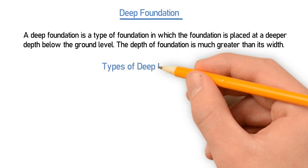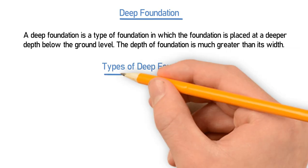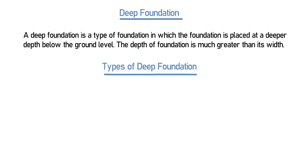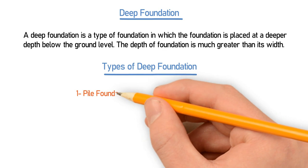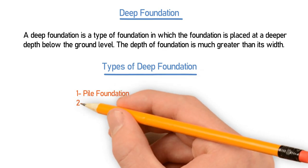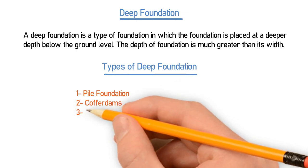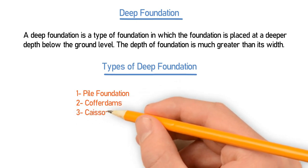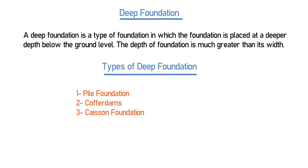Deep foundation can be further classified into three categories: number one is pile foundation, number two is cofferdam, and number three is caisson foundation. Let's discuss each of these three in detail.